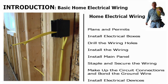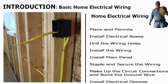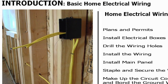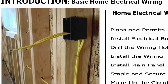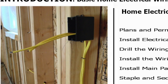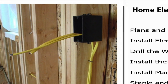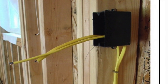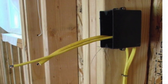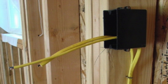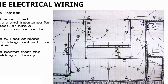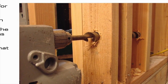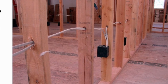Then we get into a full home electrical wiring project, starting with plans and permits, installing the electrical boxes, drilling the holes, installing the wiring, installing the main panel, stapling and securing the wiring, making up all the circuit connections and bonding the ground wire, and then installing the circuit devices after the rough inspection has been performed. We take you through the whole project — drilling holes, running wire, and stapling wiring.